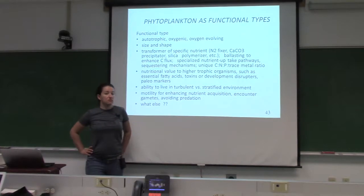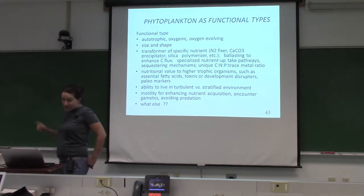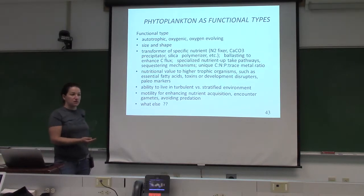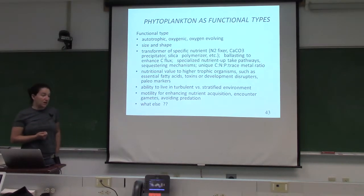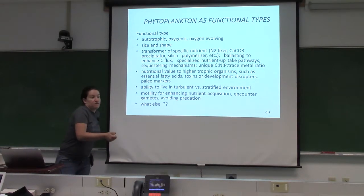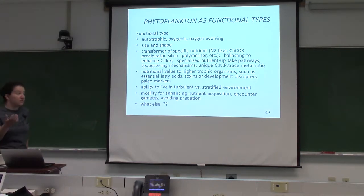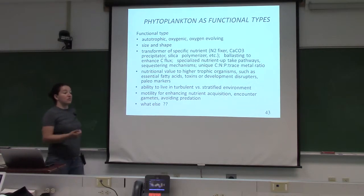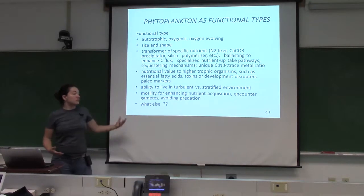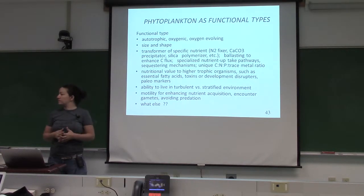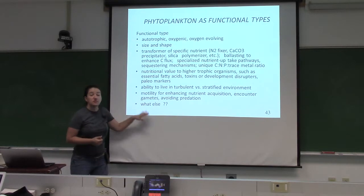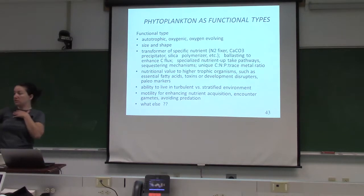Nutritional value to heterotrophic animals is another functional type consideration — the yummy versus non-yummy phytoplankton. Some produce fatty acids and oils. You can develop functional types to discern organisms with more fatty oils or higher nutritional value supporting coastal fisheries. You can also use their ability to live in turbulent versus stratified environments — diatoms tend to prefer more turbid environments than dinoflagellates. So my phytoplankton functional type algorithm is going to be different than your phytoplankton functional type algorithm, and we all want to develop phytoplankton functional types.